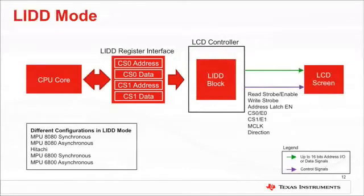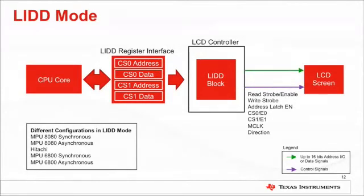Four main registers are exposed to the CPU for reading and writing. LID mode supports different configurations, and exactly which signals are provided depends on the configuration being used. Some are synchronous while others are asynchronous. As in raster mode, the output signals have variable timing parameters. One can change the output signal polarity, setup, hold, and the duration of read and write strobes, as well as the delay between write commands.